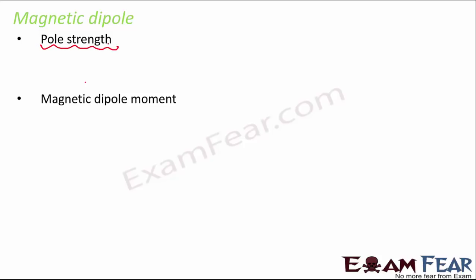When we talk about magnetic dipole, first we have to talk about pole strength. Pole strength is simply the strength of a magnetic pole to attract magnetic material towards itself. If this is a magnet, these are the two poles — north pole and south pole. Conventionally, pole strength is represented by small letter m, with plus m for north pole and minus m for south pole.